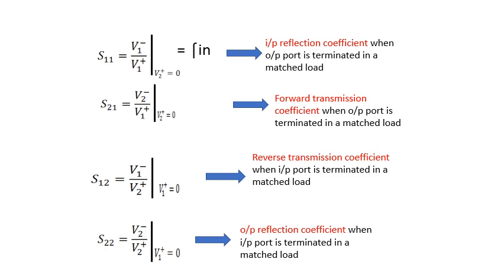What does the second one signify? S21, that is V2 minus upon V1 plus. Can you observe it is always the reflected wave upon the incident wave. The second numeral written will always be at the denominator and the first one at the numerator. S21 is called the forward transmission coefficient. This is when the output port is terminated with a matched load.